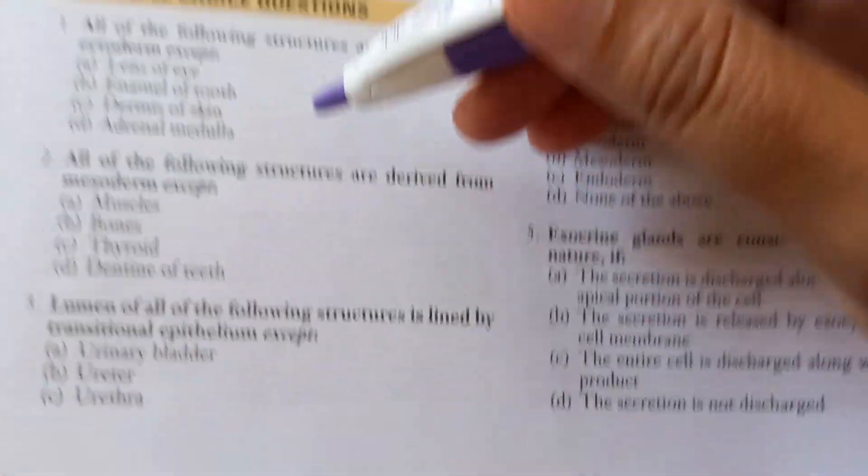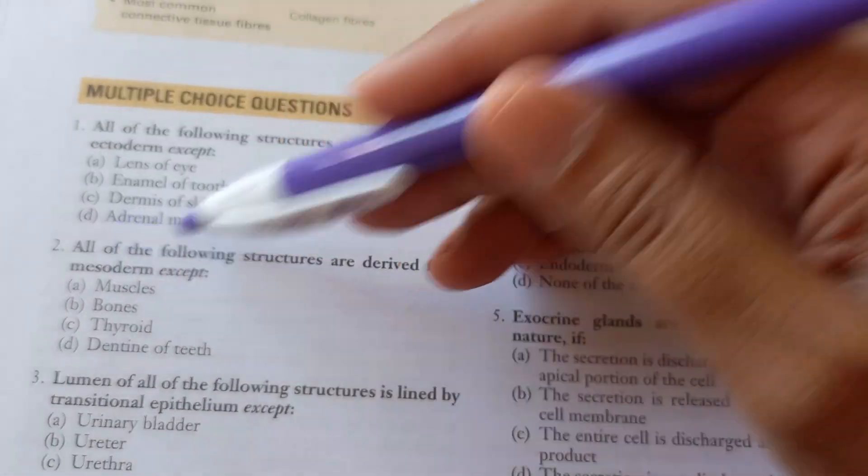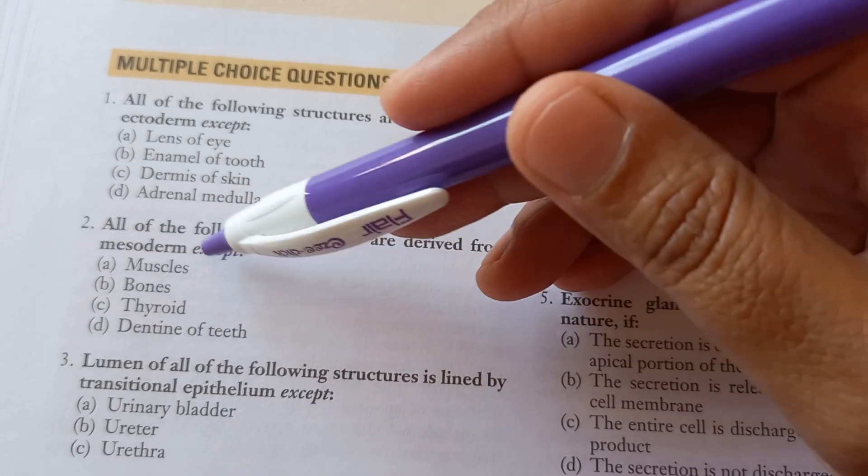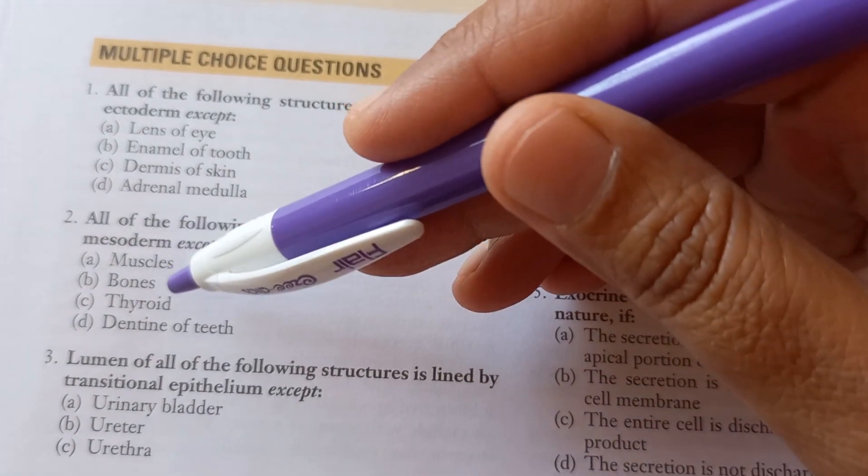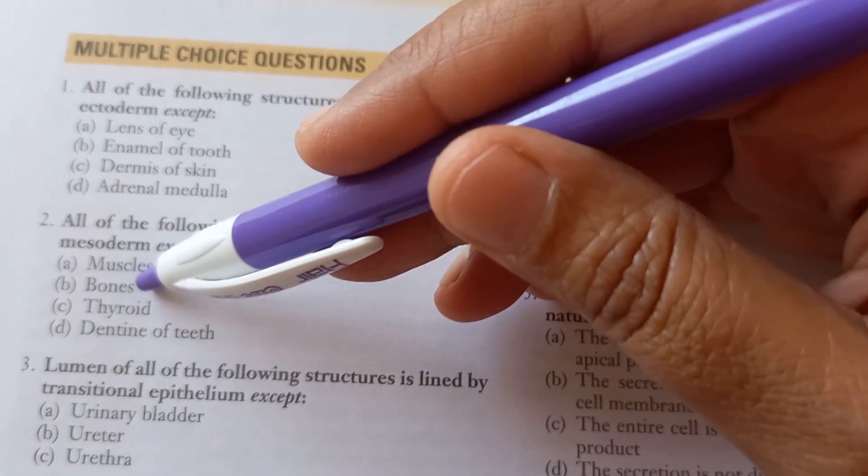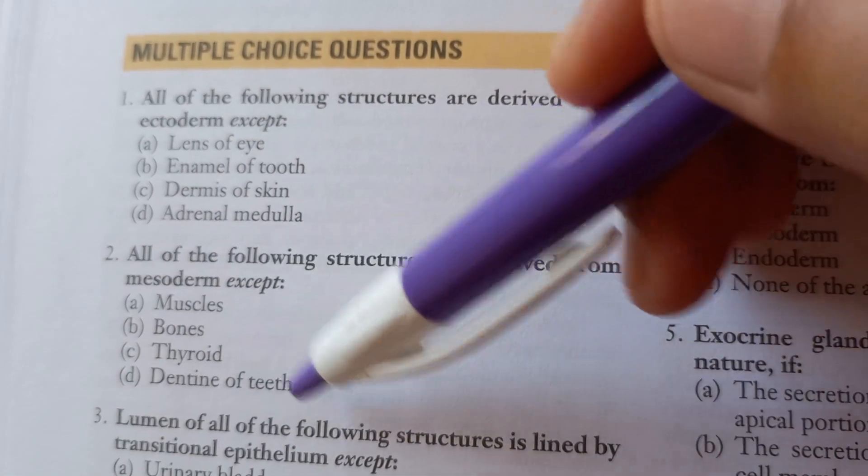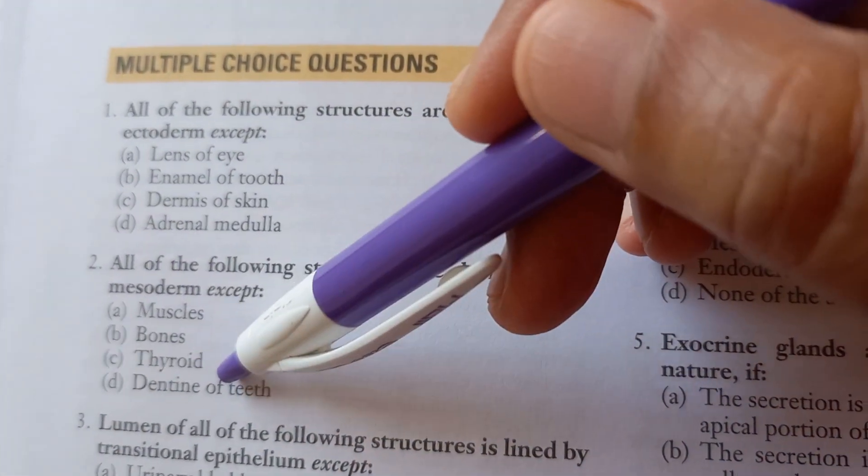MCQs, they are asking all the following structures are derived from mesoderm except. See, muscles from mesoderm, I know. What about bones? So bones and teeth are also mesoderm. Thyroid is not mesoderm, okay?